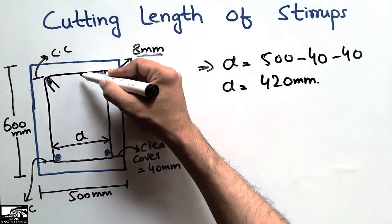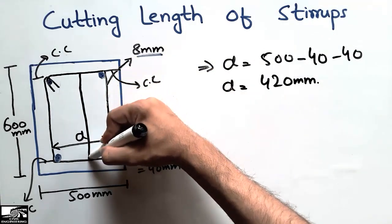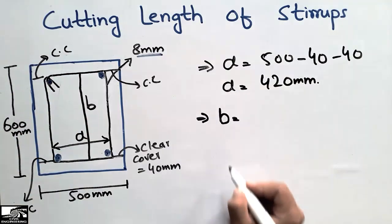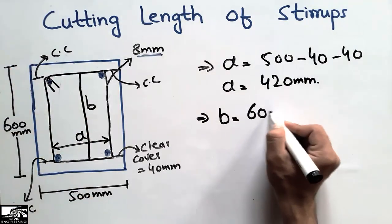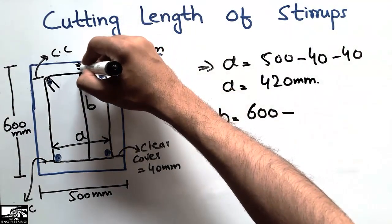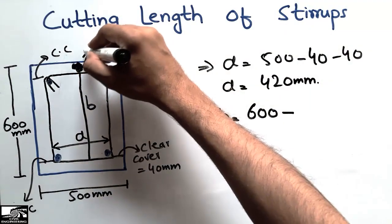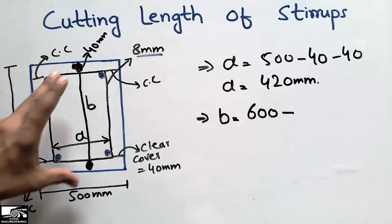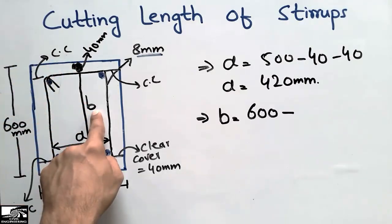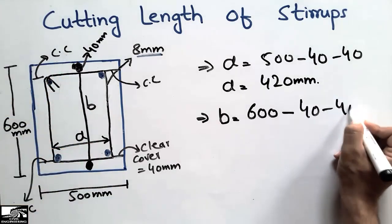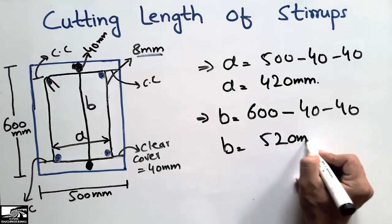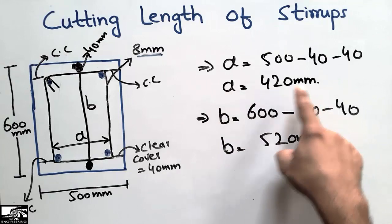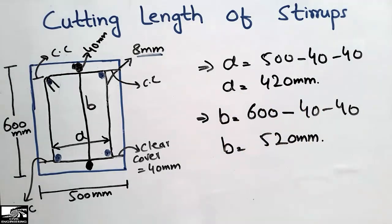Next, we find the depth of the stirrup, represented by B. B is equal to the total beam depth of 600 mm minus two clear covers: 600 − 40 − 40, which gives us B = 520 mm. So we now have A = 420 mm and B = 520 mm.